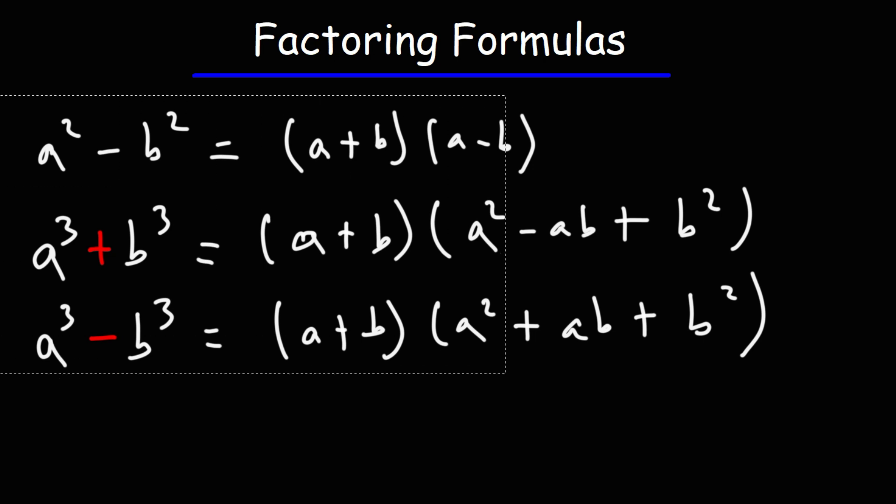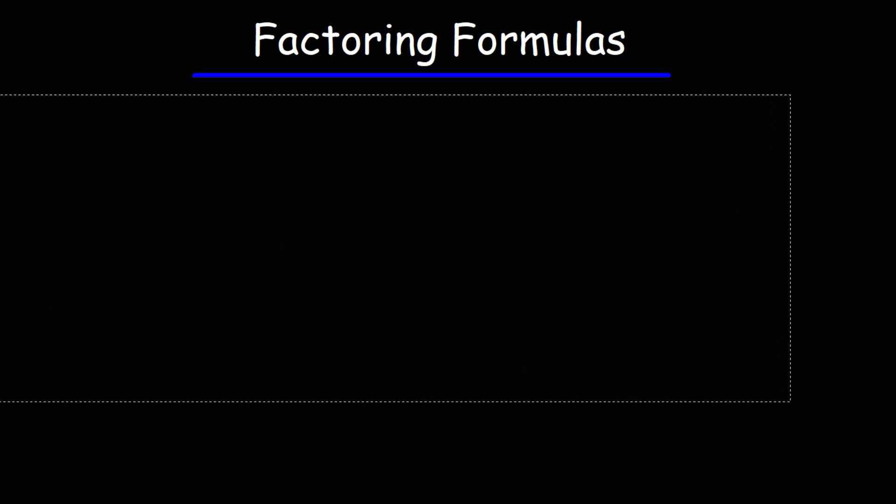Now, these are not the only formulas associated with factoring. There are other ones. Have you seen one that looks like this? A to the fifth minus b to the fifth. To factor it, it's going to be a minus b times a to the fourth plus a cubed b plus a squared b squared plus ab to the third plus b to the fourth.